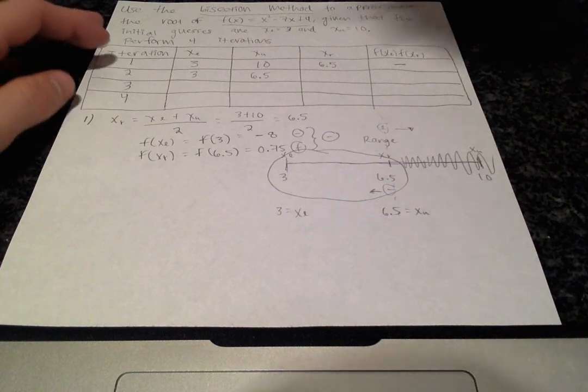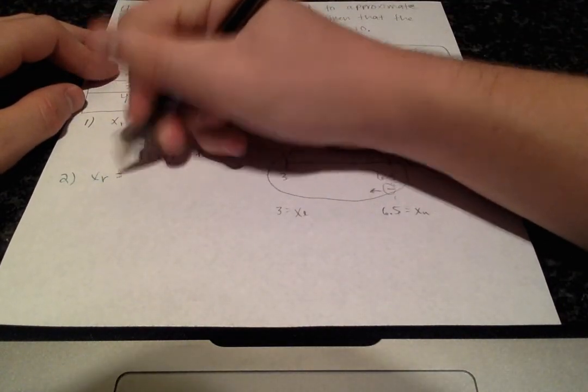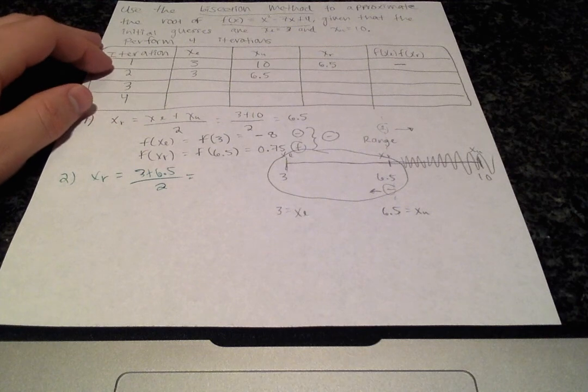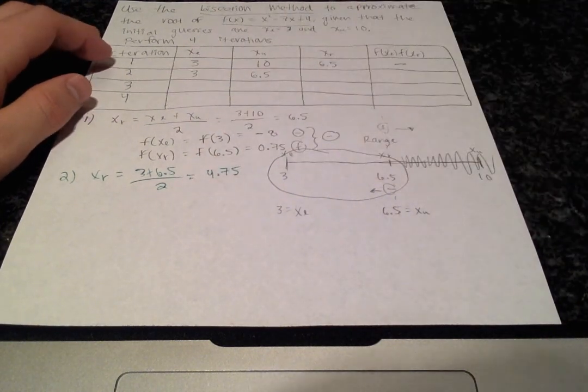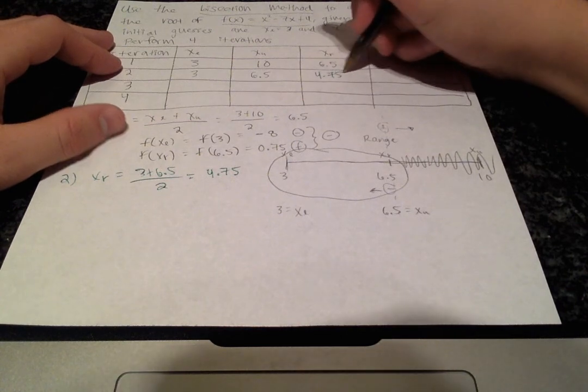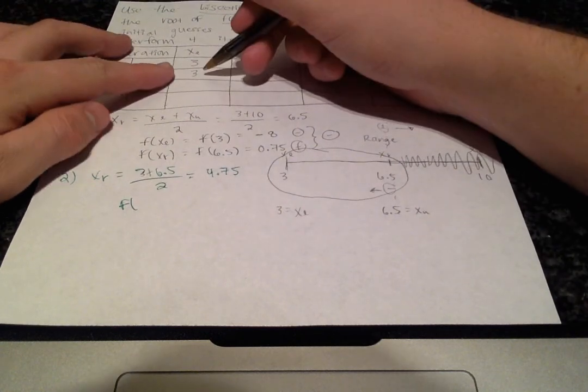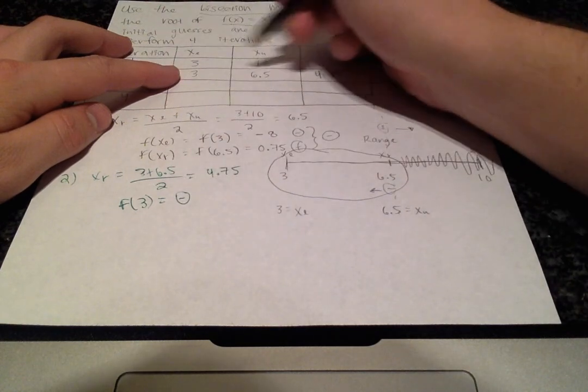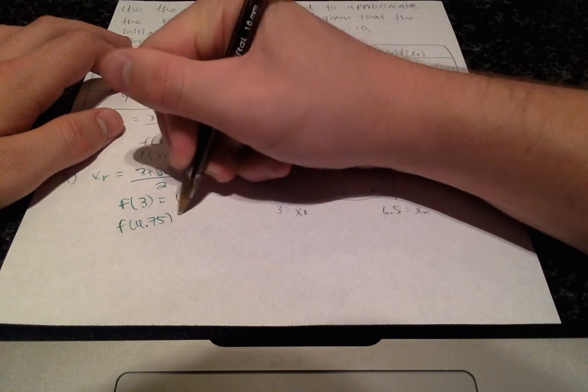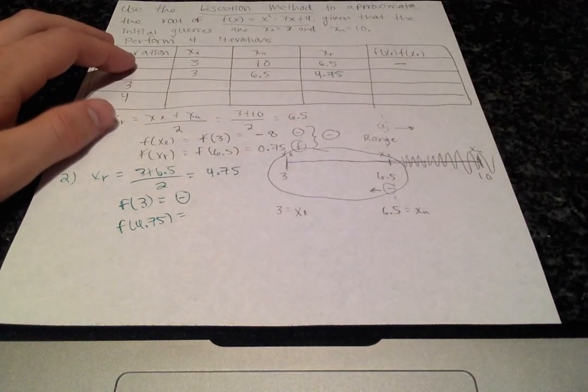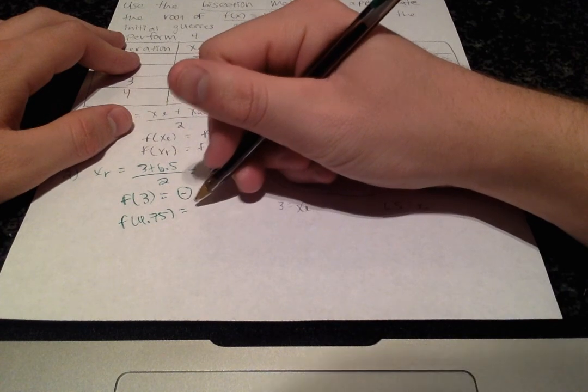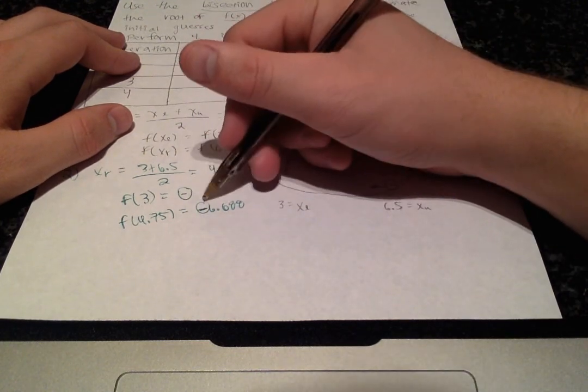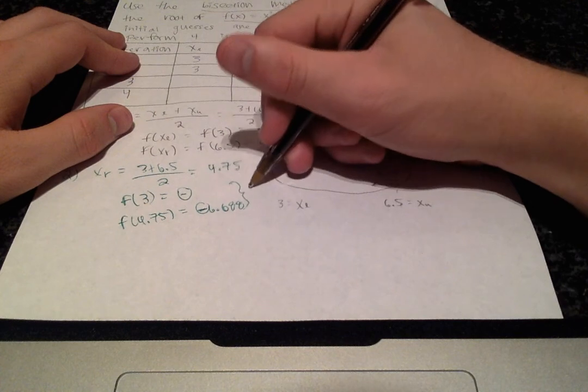For the second iteration, we'll calculate the xr value, which is 3 plus 6.5 divided by 2 or 4.75. And once again, when we evaluate the lower limit, f of 3, get a negative value. F of 4.75, our midpoint value, we get negative 6.688. The important part is the signs.